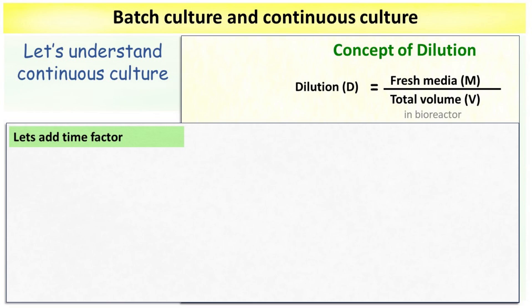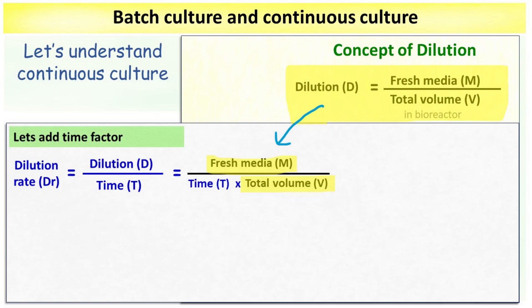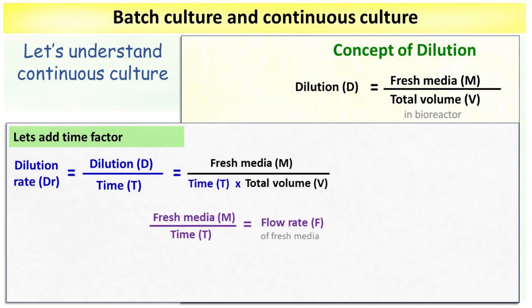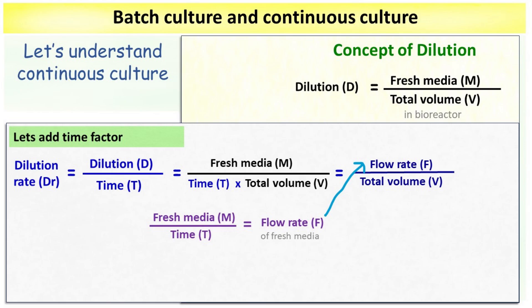Adding one more parameter: dilution per unit time gives us the dilution rate. The unit of dilution rate is time inverse. Substituting the previous equation, the volume of fresh media divided by total time is the flow rate of fresh media. Therefore, dilution rate (DR) is equal to the flow rate of fresh media divided by the total volume of the reactor.